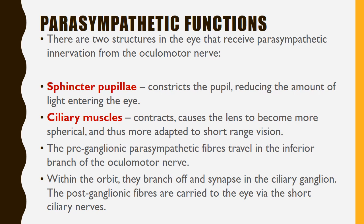The parasympathetic fibers running with the inferior branch supply the sphincter pupillae via the short ciliary nerves and postganglionic fibers of the ciliary ganglion, which constricts the pupil and reduces the amount of light entering the eye. The ciliary muscles contract to make the lens more spherical, adapting the eye for near vision. The preganglionic parasympathetic fibers travel in the inferior branch and synapse in the ciliary ganglion within the orbit.